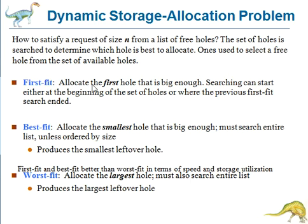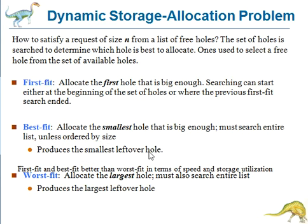First fit: allocate the first hole that is big enough. Searching can start either at the beginning of the set of holes or where the previous first fit search ended. Best fit: allocate the smallest hole that is big enough; must search the entire list unless ordered by size, and produces the smallest leftover hole. First fit and best fit are better than worst fit in terms of speed and storage utilization.